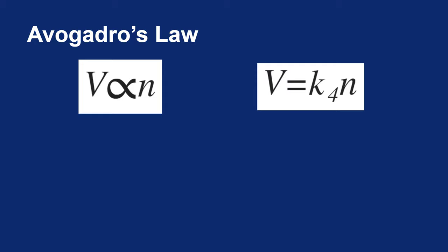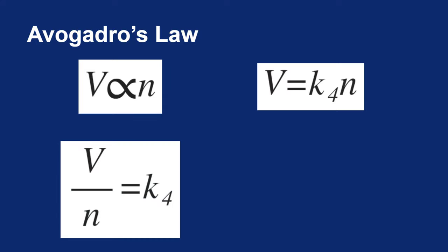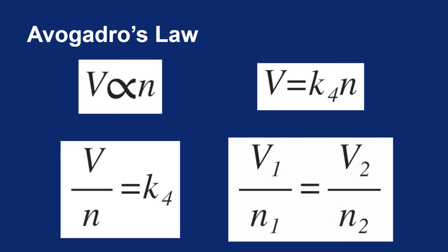As before, we can put the variables on one side and the constant on the other. So I will say the volume divided by the number of moles will equal a constant. If I have the constant on one side, I can compare my initial and final values. And I get a statement, V1 over n1 equals V2 over n2.